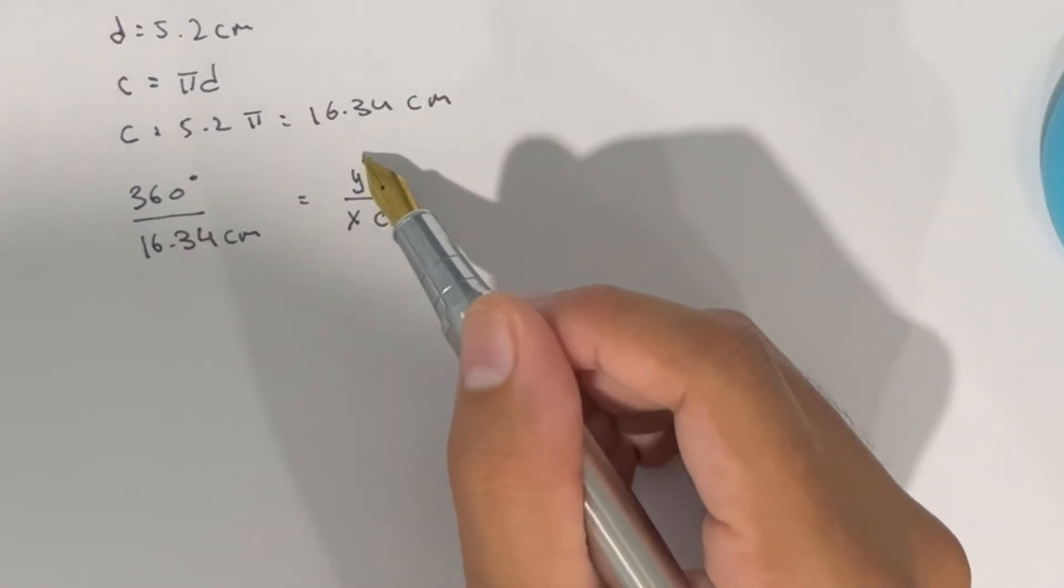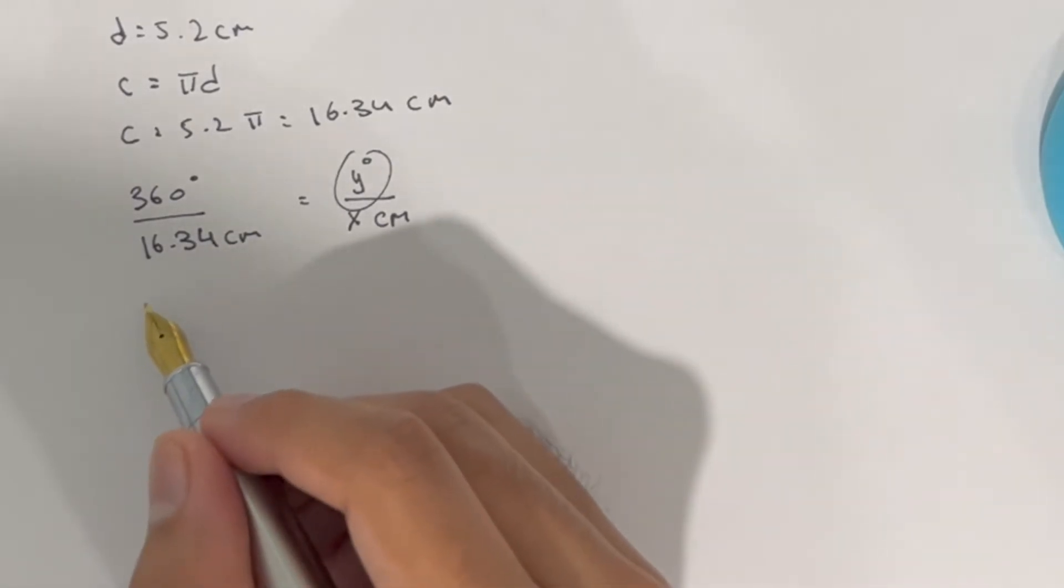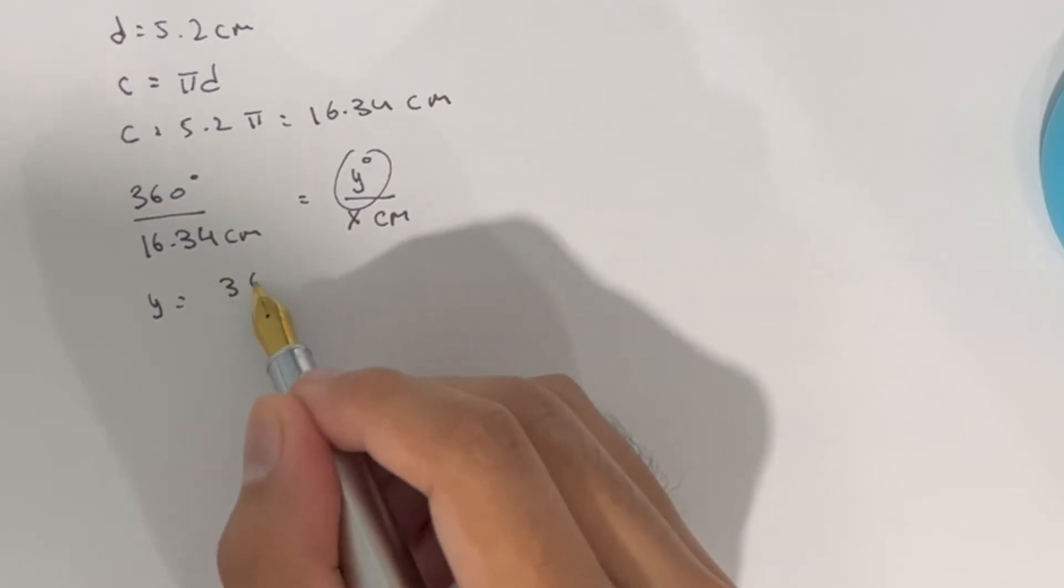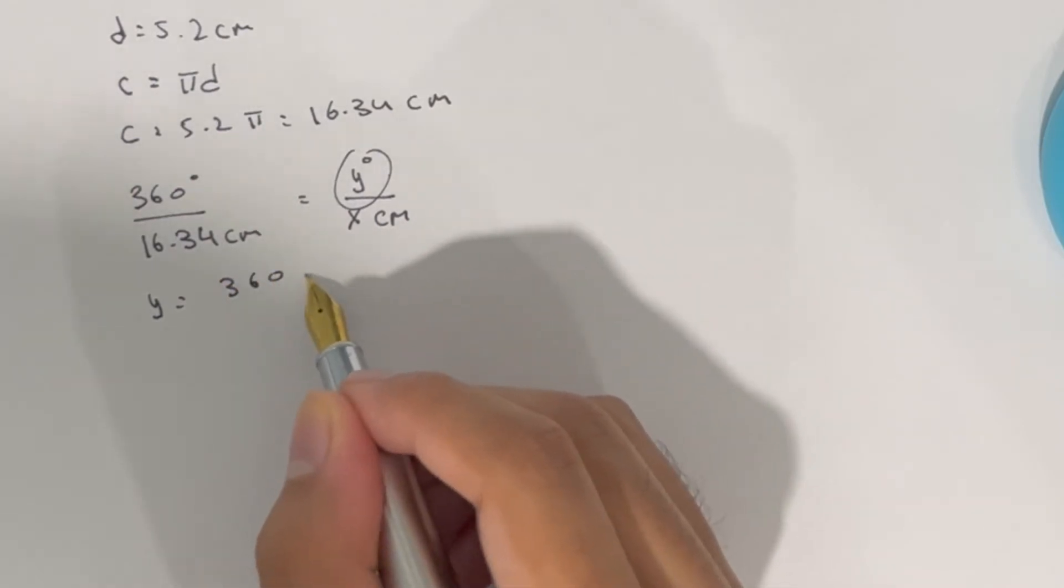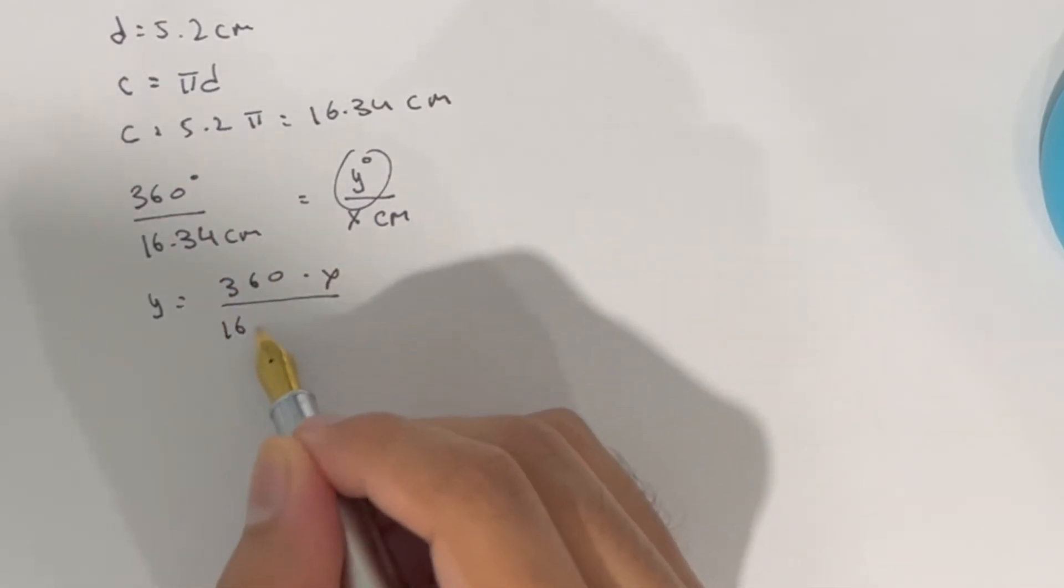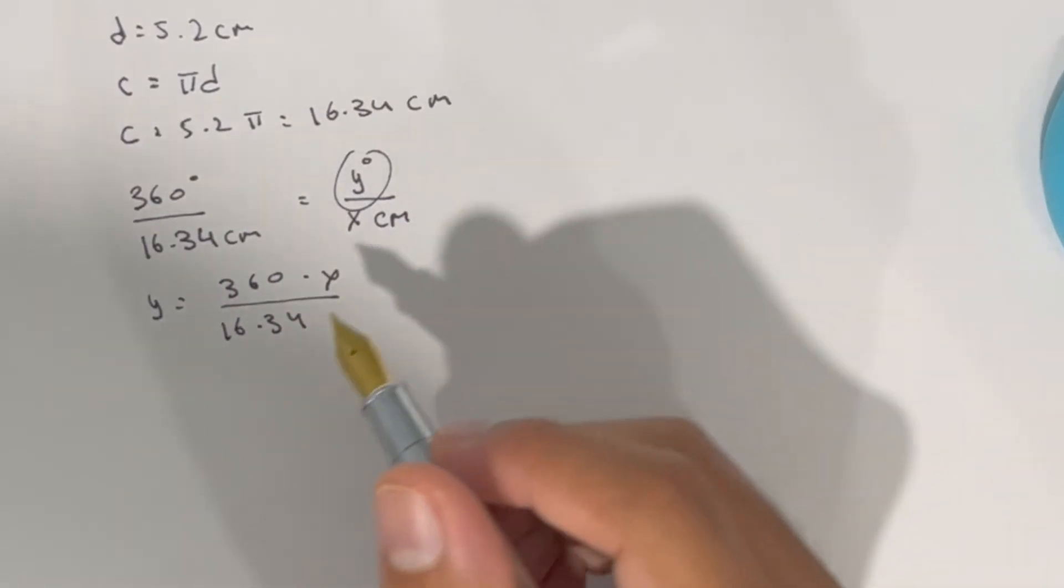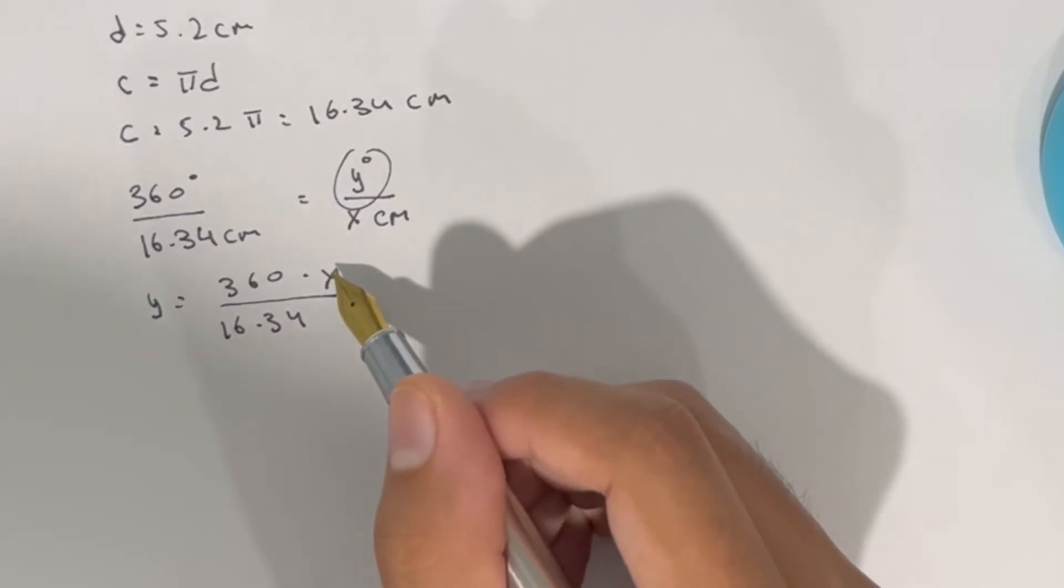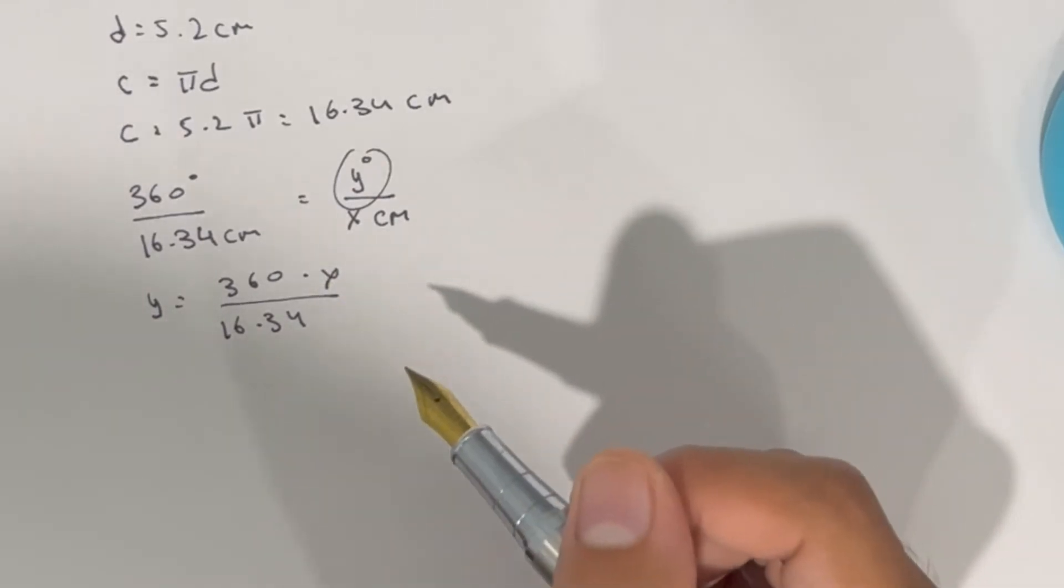What I want to do is just isolate for the variable y here. To do this, I'm going to move x to this side by multiplying on both sides, and I will get 360 multiplied by x divided by 16.34. This will give me the value in degrees of how much the motor needs to spin given an input x, which will be the centimeters that I want to go.